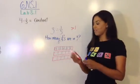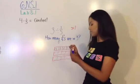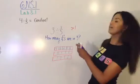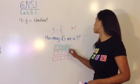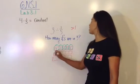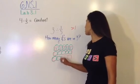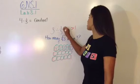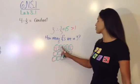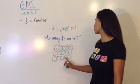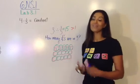Alright, enough talking. Let's circle our fifths — how many fifths go into three? There's a fifth, there's a fifth, there's a fifth. We have five fifths in one whole. In two wholes, we have ten. And in three wholes, we have fifteen. So our quotient is fifteen — one fifth goes into three fifteen times. We count them: 1, 2, 3, 4, 5, 6, 7, 8, 9, 10, 11, 12, 13, 14, 15.